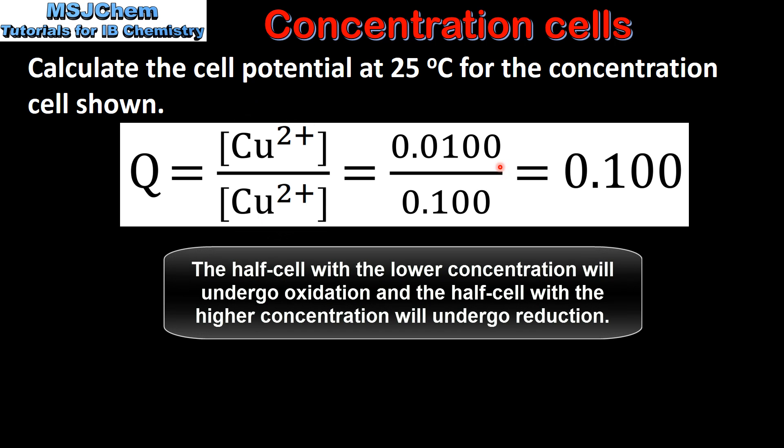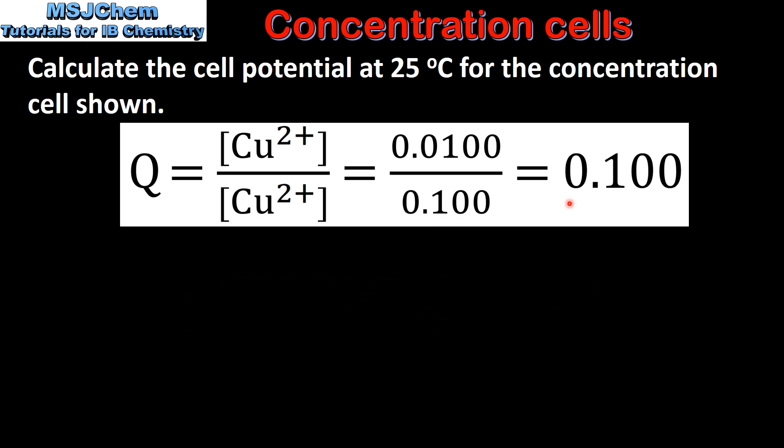In a concentration cell, the half cell with a lower concentration will undergo oxidation and the half cell with a higher concentration will undergo reduction. This gives us a value of Q of 0.100.